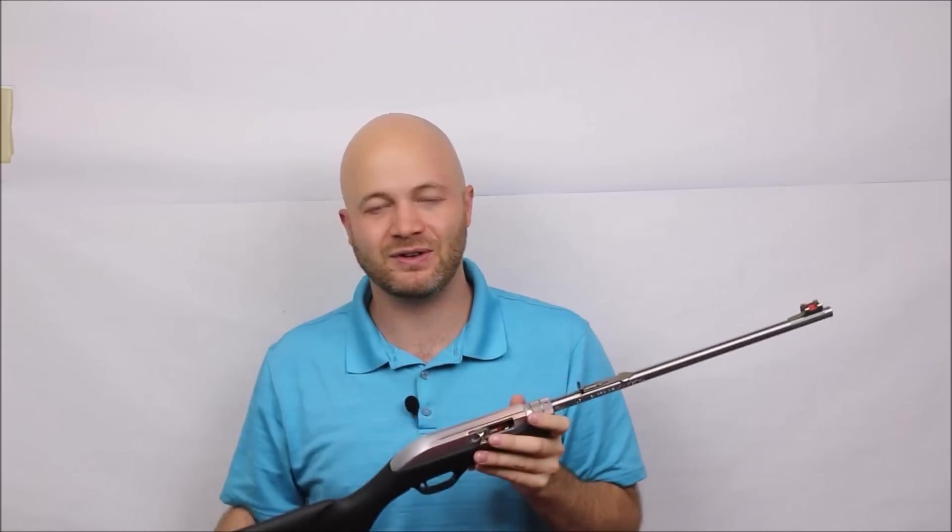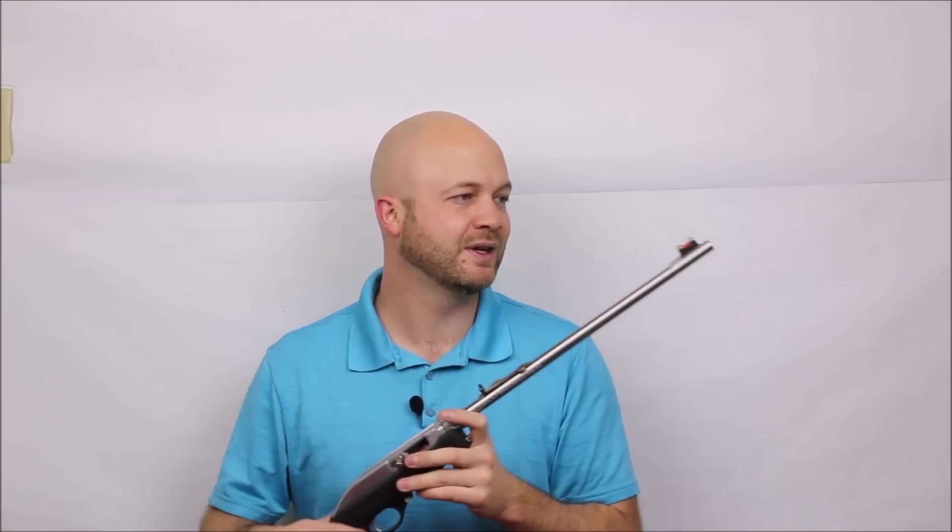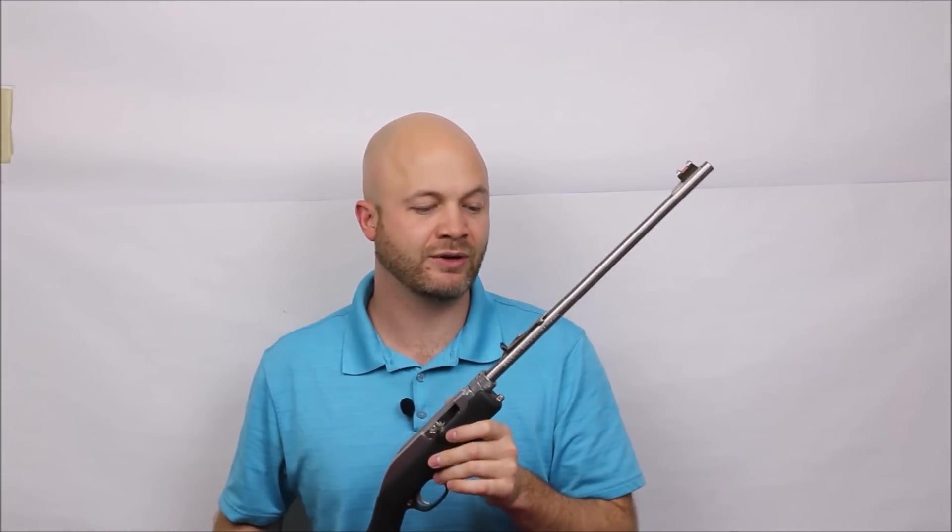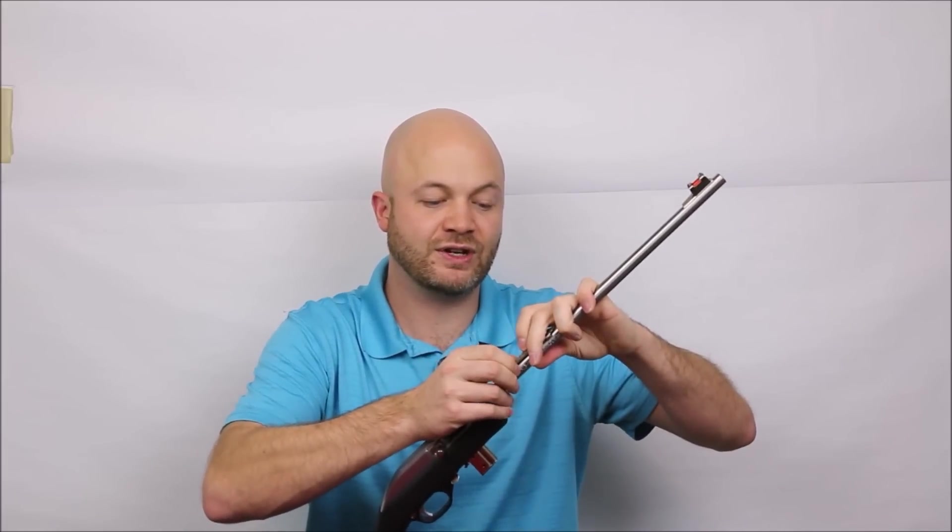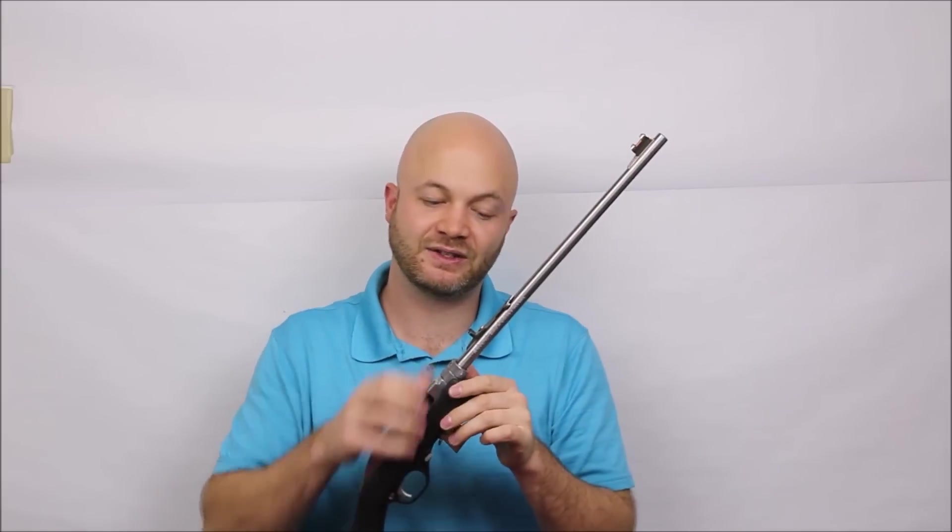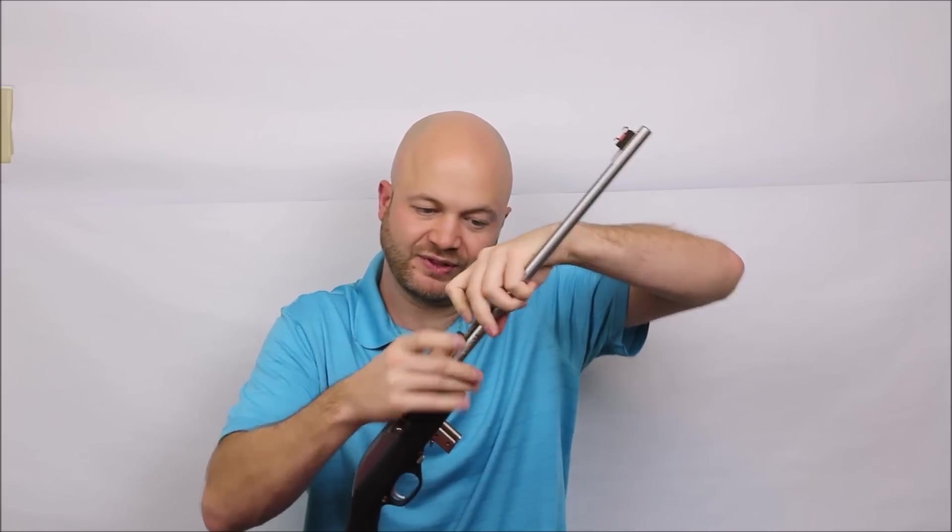It does have sling studs up front here and on the back. There isn't really a lot to hang onto this thing, but if you really need to sling it, you could. The sights are well protected on the front here, so you're not going to knock those guys around. If you need to adjust it for elevation, you can pop it up like that or pull this ramp sight down here at the back.